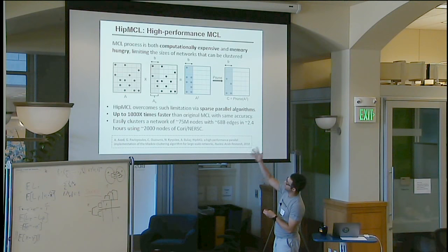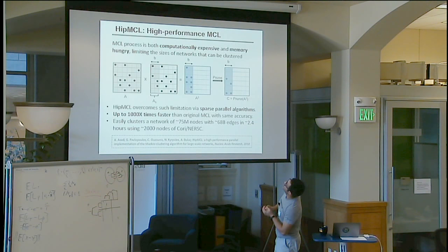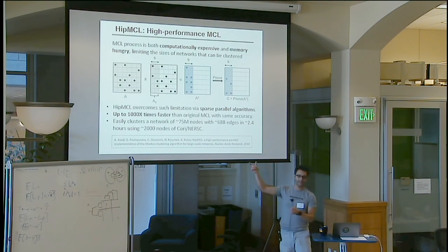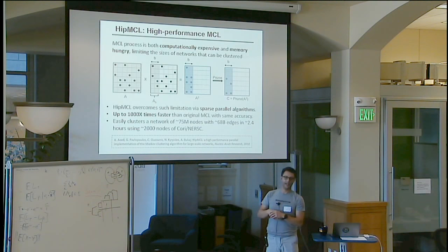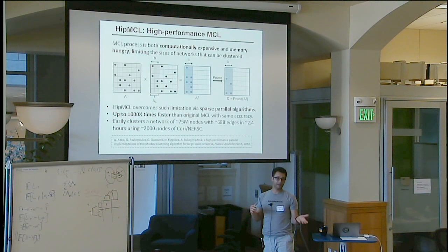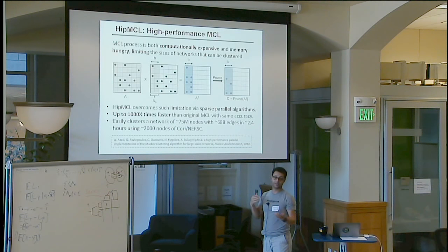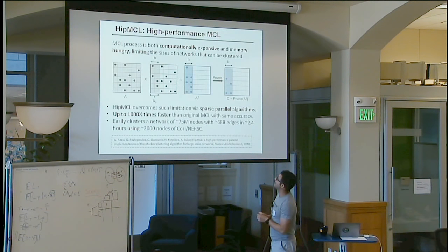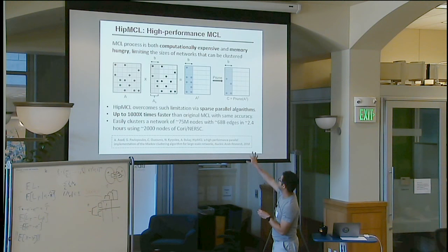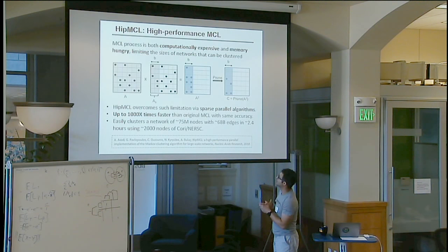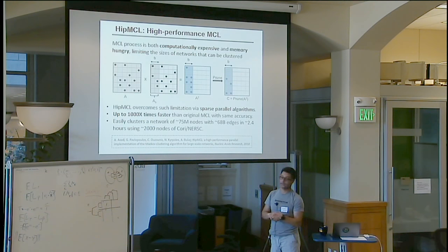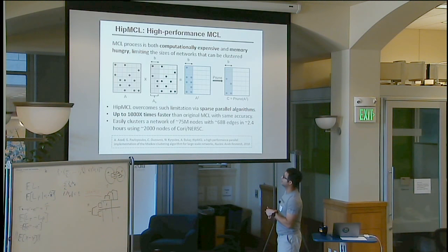So what HipMCL, what we called our high performance MCL does, is you select the number of columns that you want to expand at any point and it depends on your memory consumption and how much parallelism you have. So you basically try to keep it as large as possible without bloating your memory. And it dynamically chooses that. So it can actually cluster things pretty fast. These kinds of problems were considered out of reach for MCL and they've been using some cheaper algorithms that they didn't like the results. So this works really good.